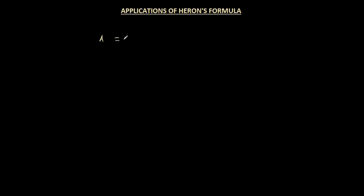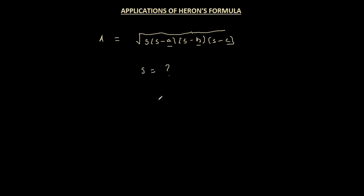The quiz question for today: according to Heron's formula, the area of a triangle is the square root of S times (S minus A) times (S minus B) times (S minus C). What does S stand for, and how is it calculated? Leave your answers in the comment section below. In this video, we discussed finding the area of a triangle given its three sides. In the next video, we'll learn about finding the area of other shapes.